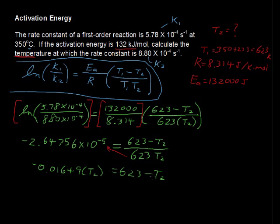Now let's add 1 T2, or add T2 to each side. That gets rid of it on this side, and it adds 1 to this coefficient. So that gives us 0.983506 times T sub 2. We're in the home stretch.